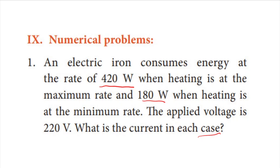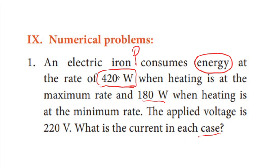So in the problem, if we use day-to-day life, we use an electric iron which consumes energy. The power at maximum rate is 420 watts, and at minimum rate is 180 watts. The applied voltage is 220 volts. Now we have to write the given values.